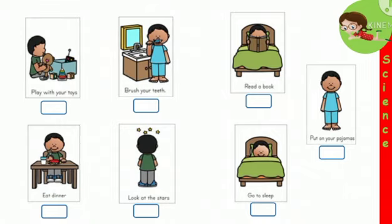Great! Number one, look at the stars. Play with your toys is number two, eat dinner is number three, put on your pajamas is number four, brush your teeth number five, read a book number six, and finally go to sleep which is number seven.